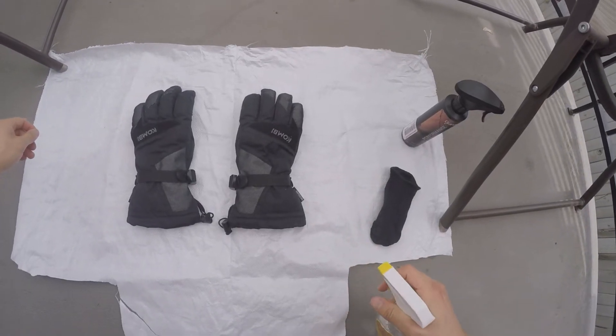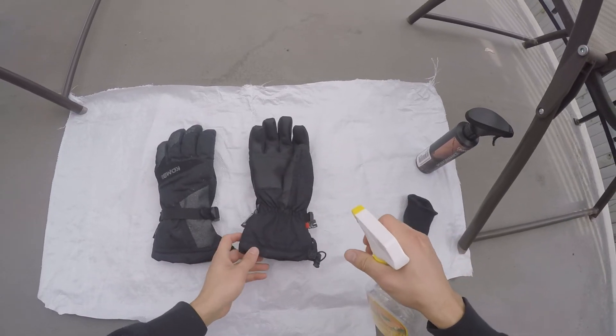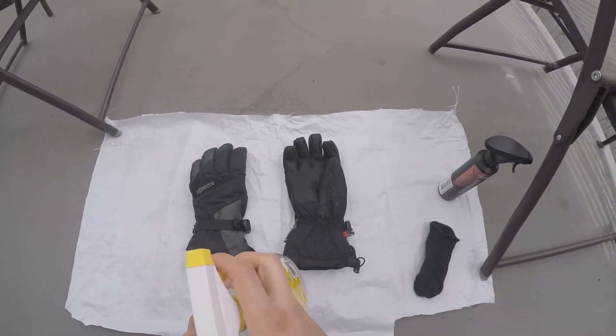Once that's done, you'll want to generously spray it with your water bottle to make the outer surface slightly damp. This will help the waterproofing solution more evenly coat and absorb into your garment.